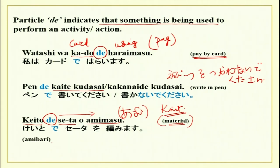Amibari is knitting needles. So amibari de seta wo amimasu — I knit a sweater with the help of knitting needles. Using something, you perform an activity. Please note there is a small mistake: seta is a long sound. Please remember — seta.